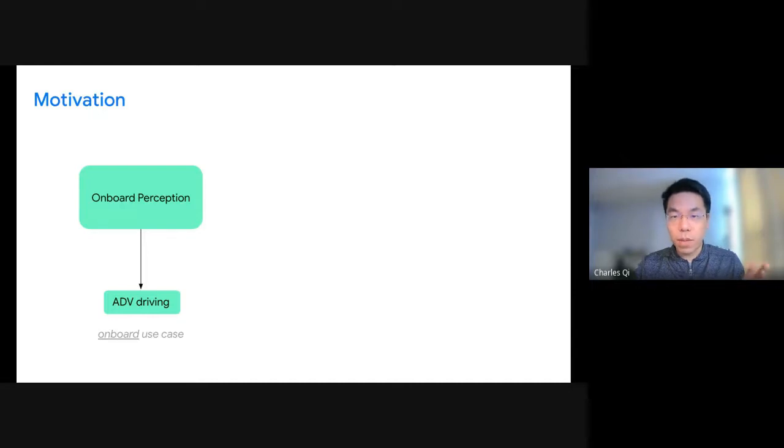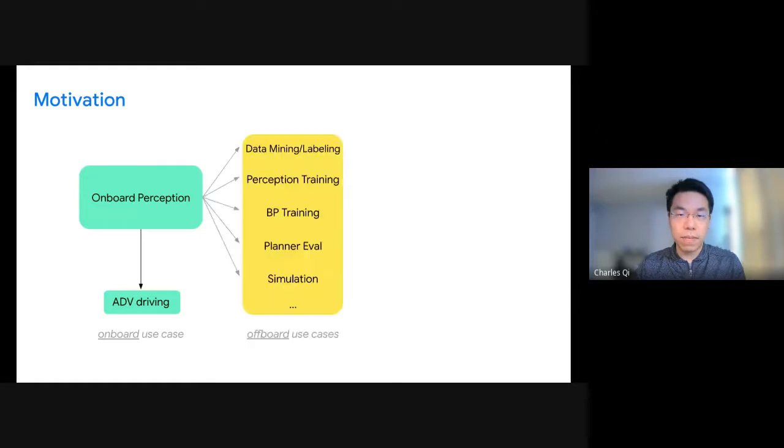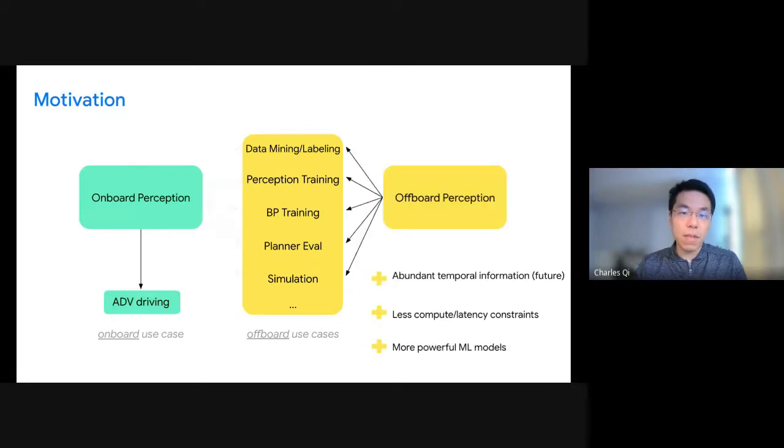More broadly, when we think about perception for autonomous driving, most of the attention has been on the onboard use cases, where the perception is running on some onboard hardware in the vehicle, even real-time results. However, the perception can also be used in many offboard use cases, such as for data mining, for perception model training through teacher-student models, or behavior prediction model training and evaluation, planner evaluation, and even simulation. For those applications, they may require very different types of perception characteristics compared to the onboard scenario. It makes a lot of sense to actually have another stack of offboard perception to serve those purposes. It may share many modules with the onboard one, but could be more flexible in terms of input data format, problem formulations, and compute latency constraints.